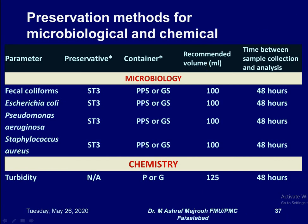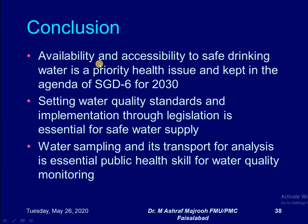In conclusion, the availability and accessibility to safe drinking water is a priority health issue, kept in the agenda of Sustainable Development Goal 6 for 2030. Setting water quality standards and implementing them through legislation is essential for safe water supply. Water sampling and transport for analysis is an essential public health skill for water quality monitoring.